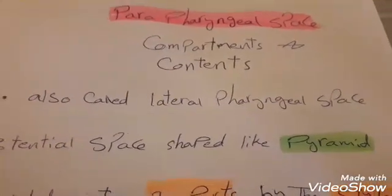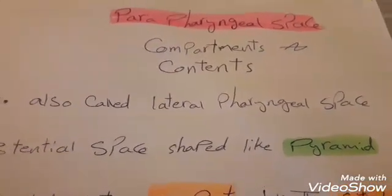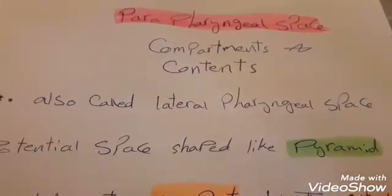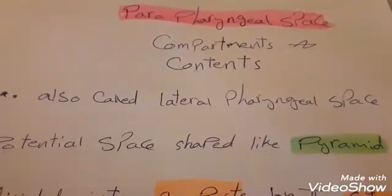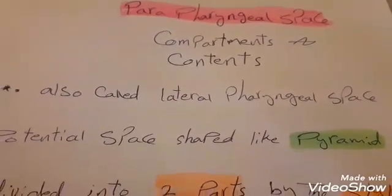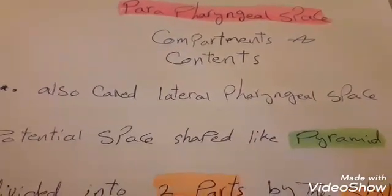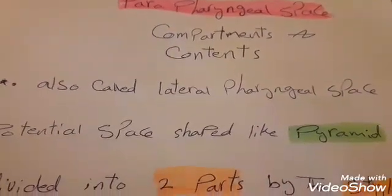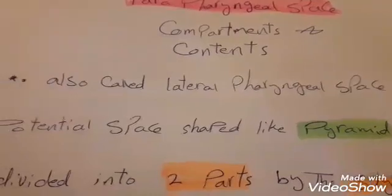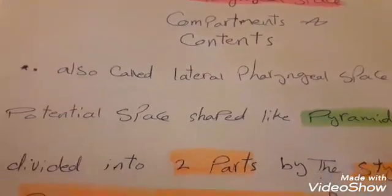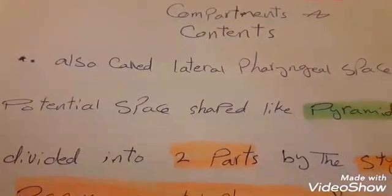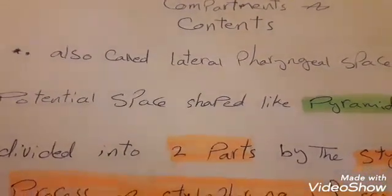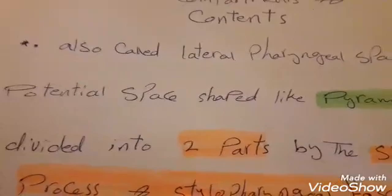Hello everyone! Today we have some notes about the parapharyngeal space, compartments and contents. It is also called the lateral pharyngeal space. It is a potential space, not a real space, shaped like a pyramid.